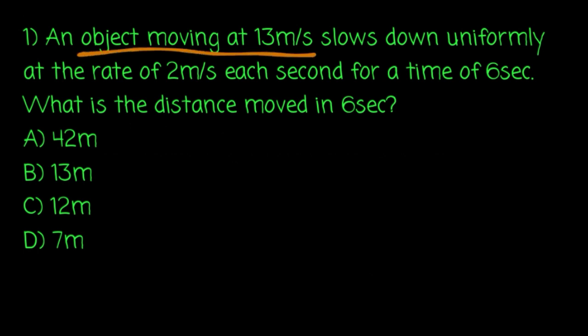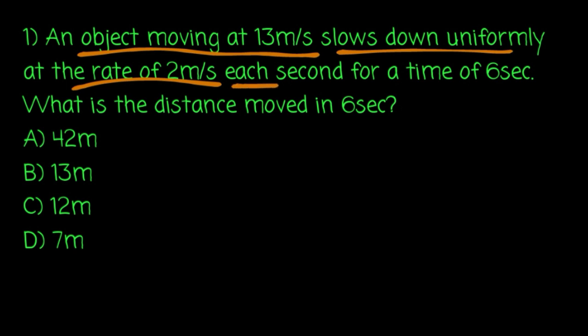An object moving at 13 m per second slows down uniformly at the rate of 2 m per second each second for a time of 6 seconds. What is the distance moved in 6 seconds?